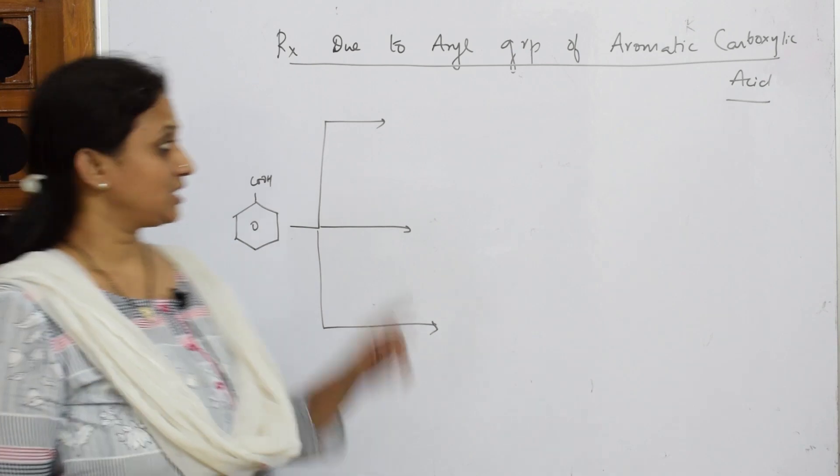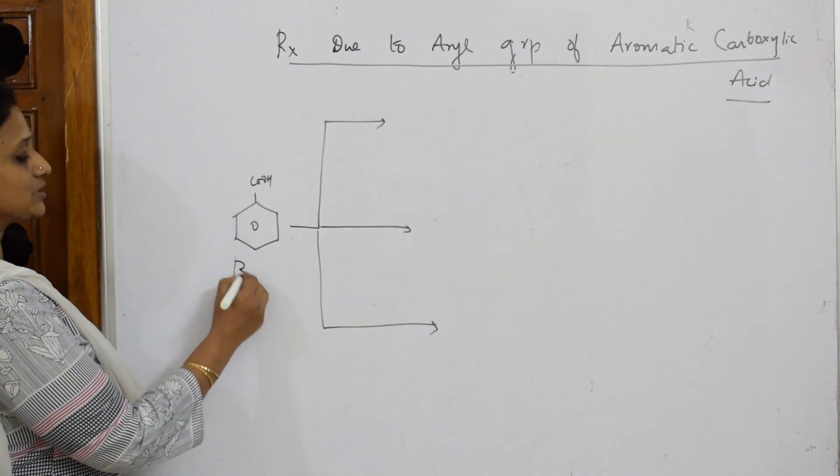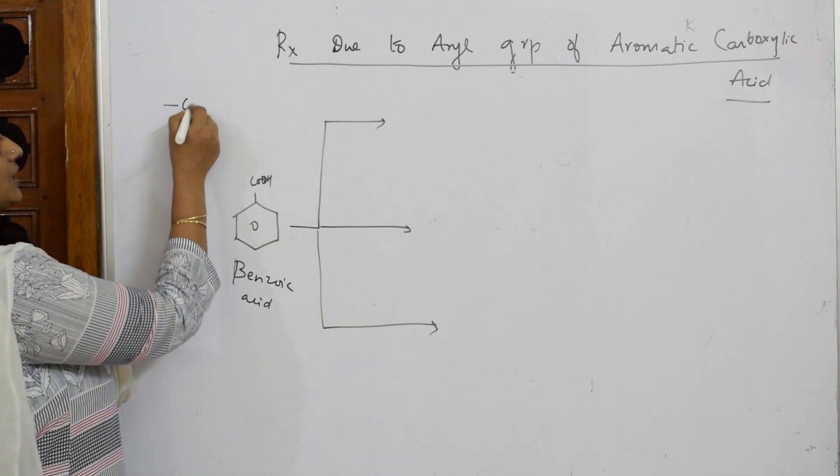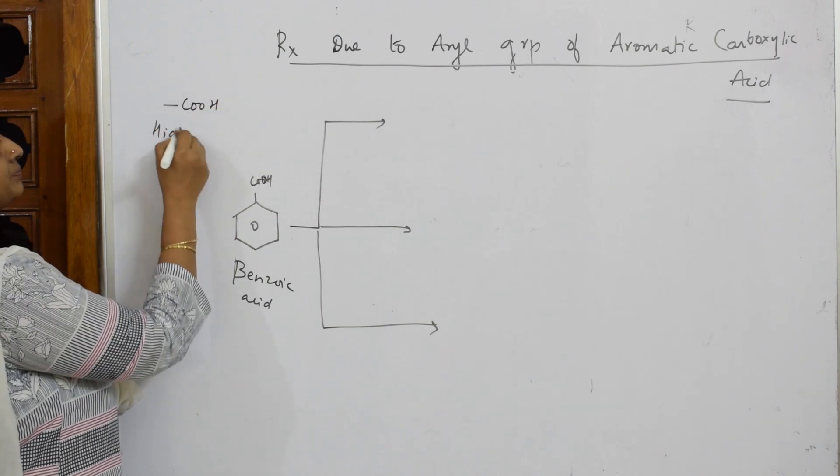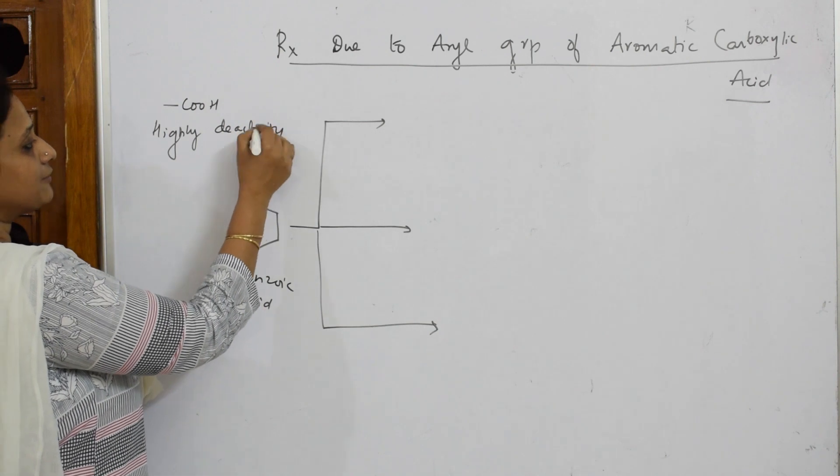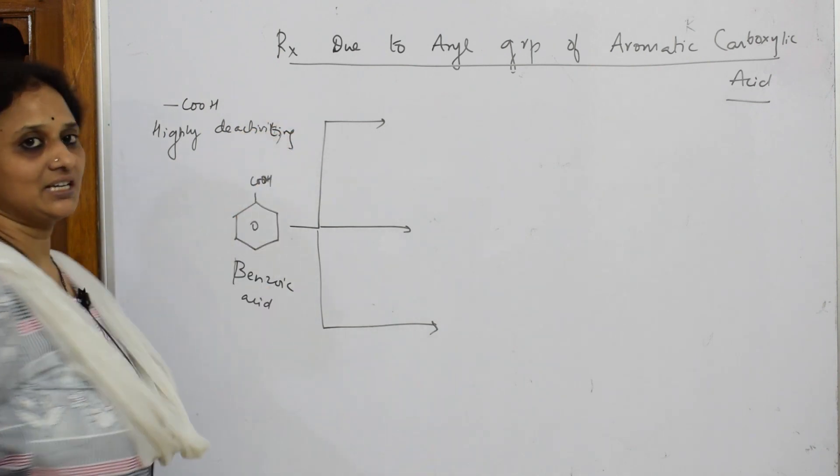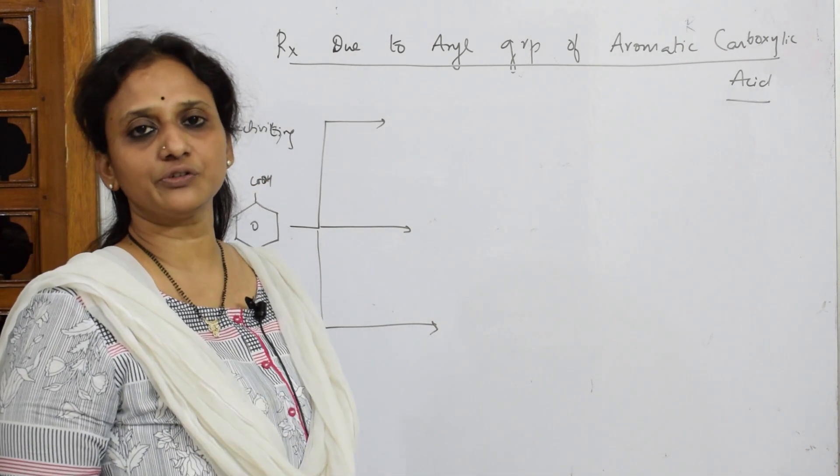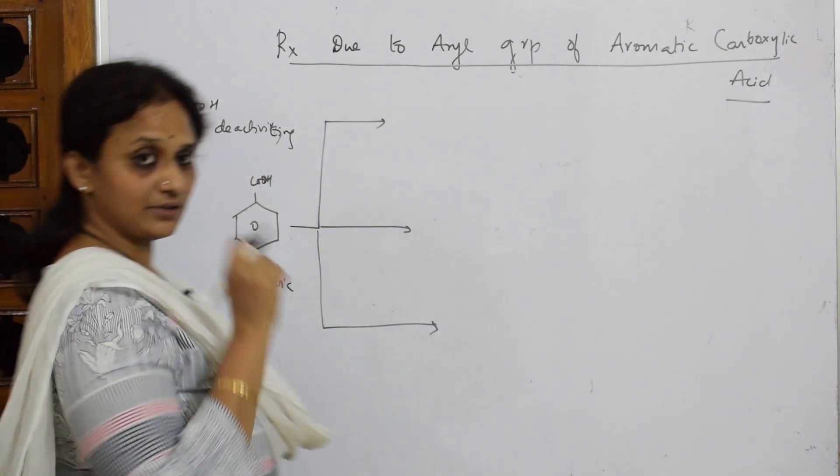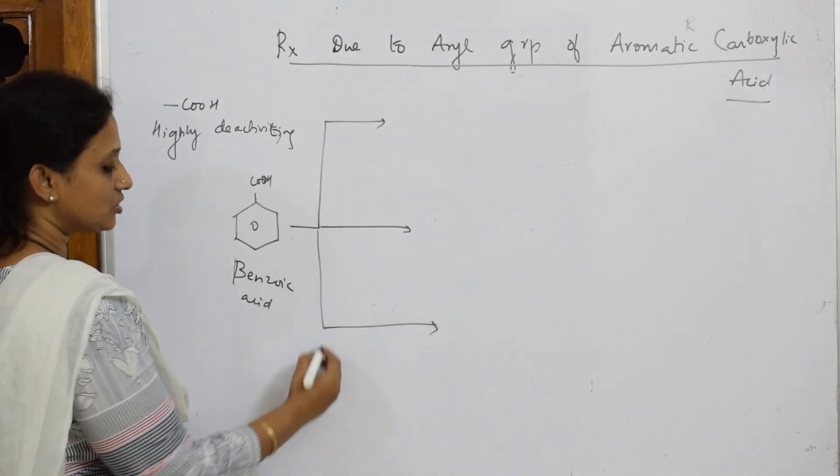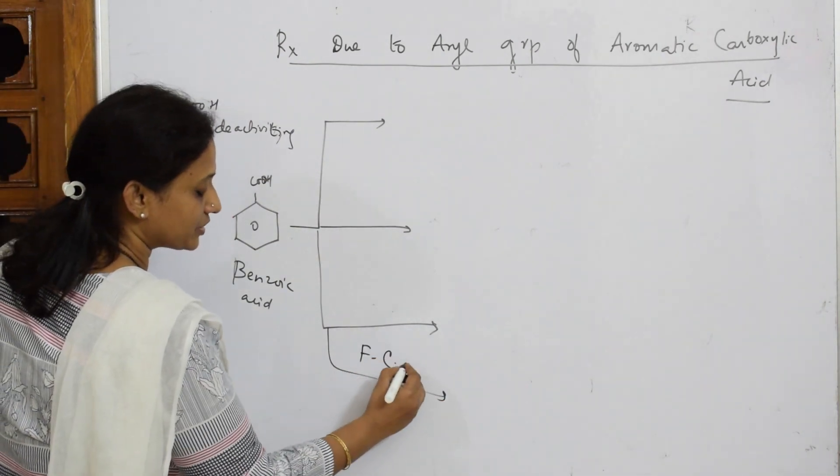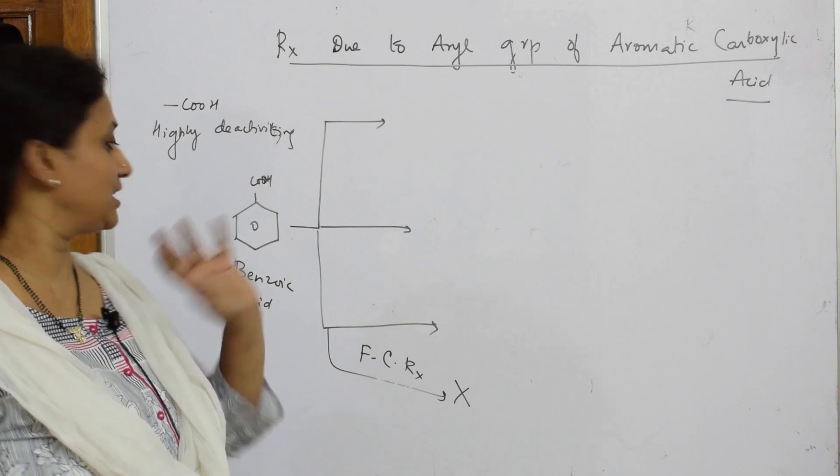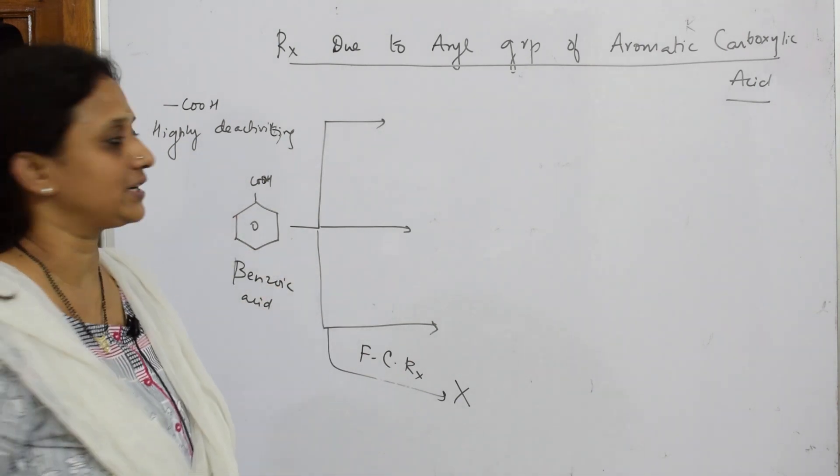So when I speak about the aryl or aromatic carboxylic acids, now I picked up benzoic acid. Now what is the speciality of this? Your carboxylic acid group is a highly deactivating group. If I have to perform certain reactions like nitration, sulfonation, electrophilic substitution reactions, I have to use drastic conditions only. Because of this COOH deactivating group, it does not show Friedel-Crafts reaction. So Friedel-Crafts reaction - that is your alkylation and acylation - is not shown by your COOH. Most important thing: deactivating, it will not quickly accept the incoming electrophile.